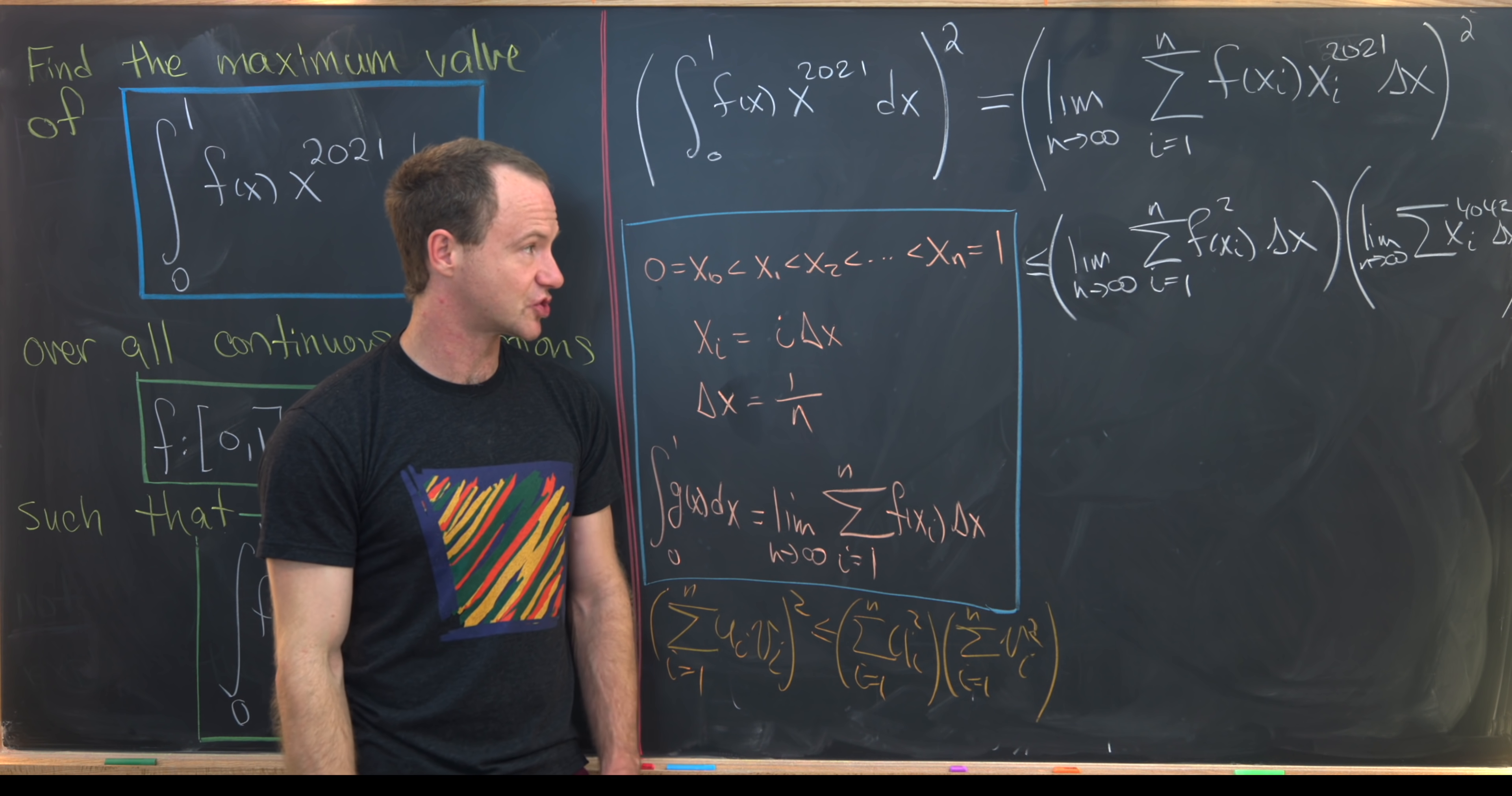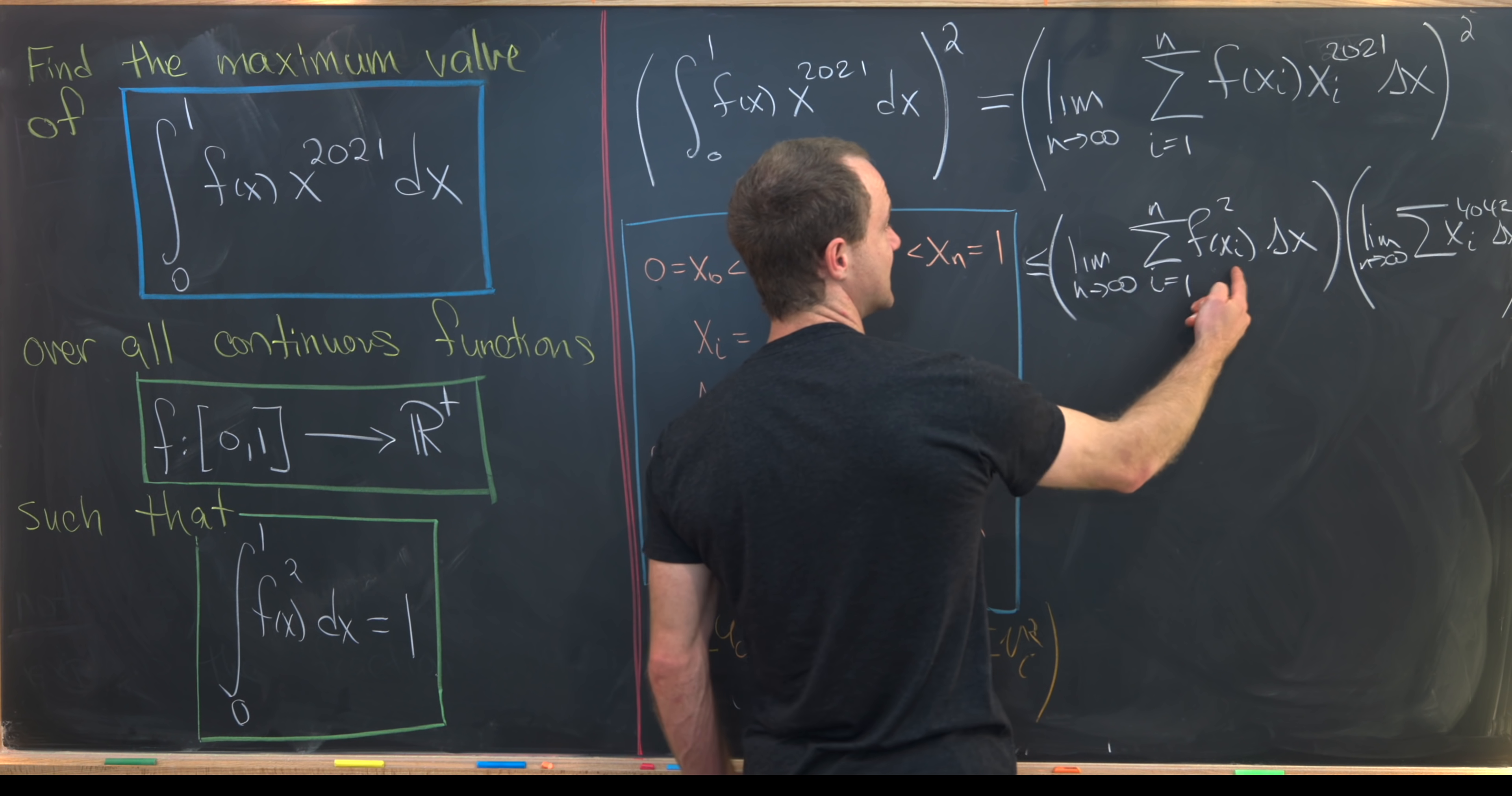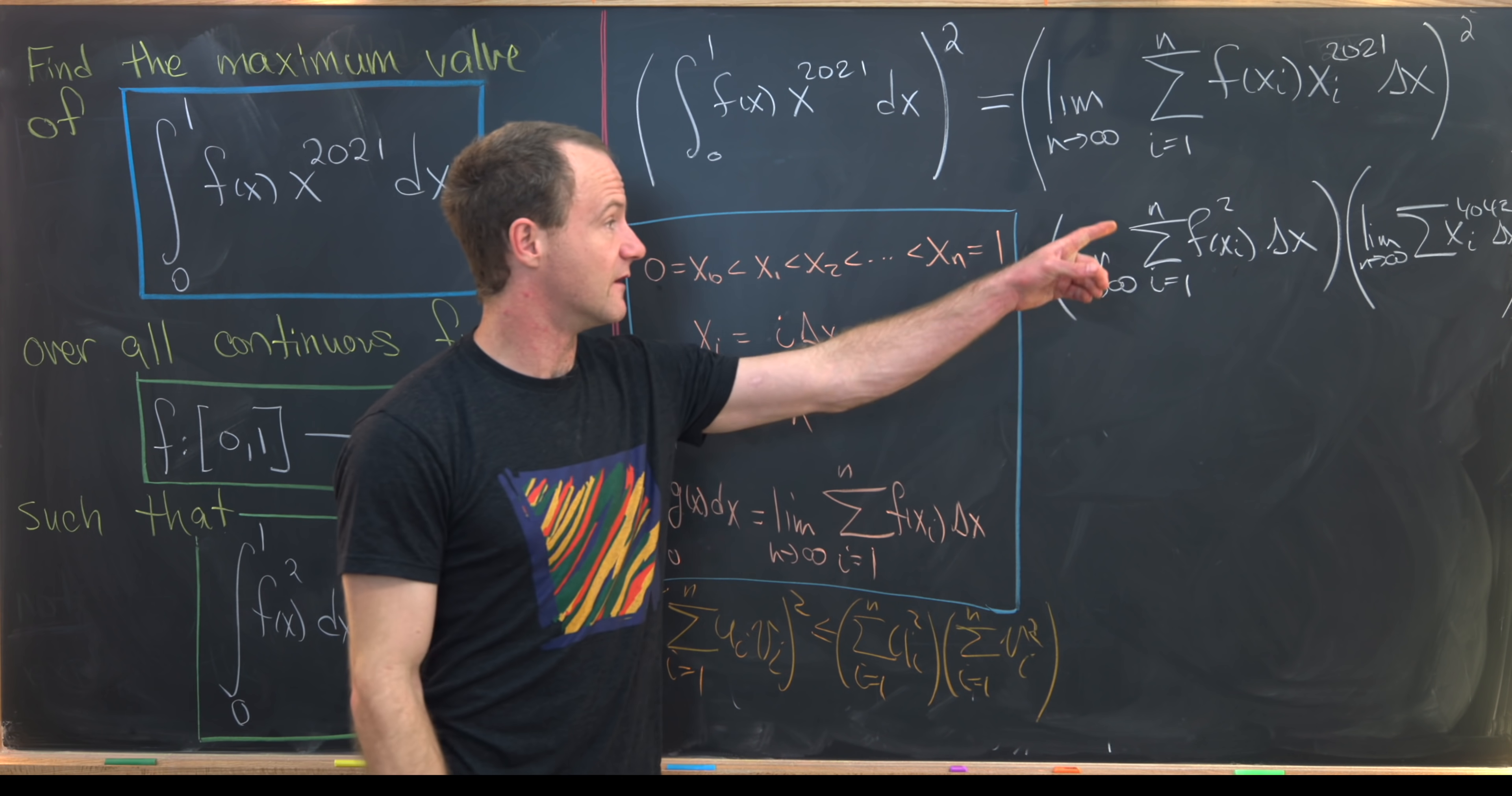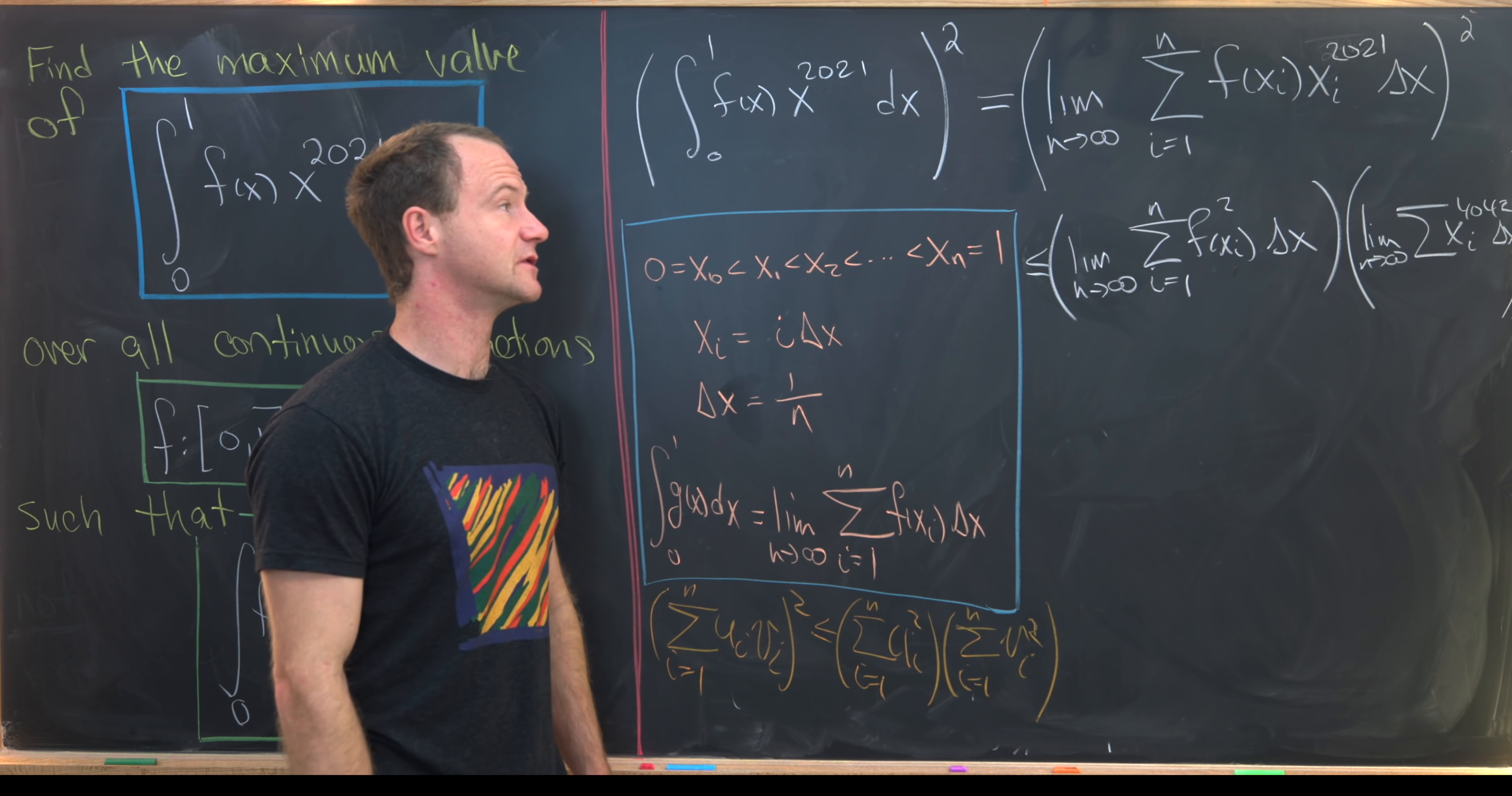You might say, where did my delta x squared go? Well, I took one copy of the delta x and put it in this sum, another copy, and I put it in this sum. And then the 4042 is just 2 times 2021.